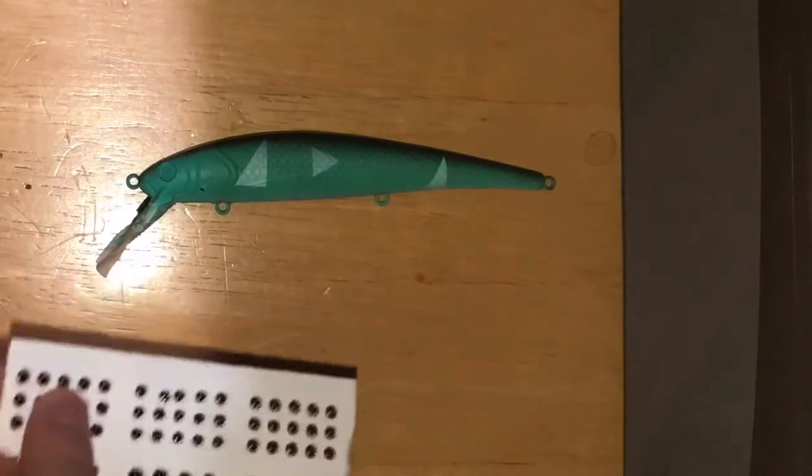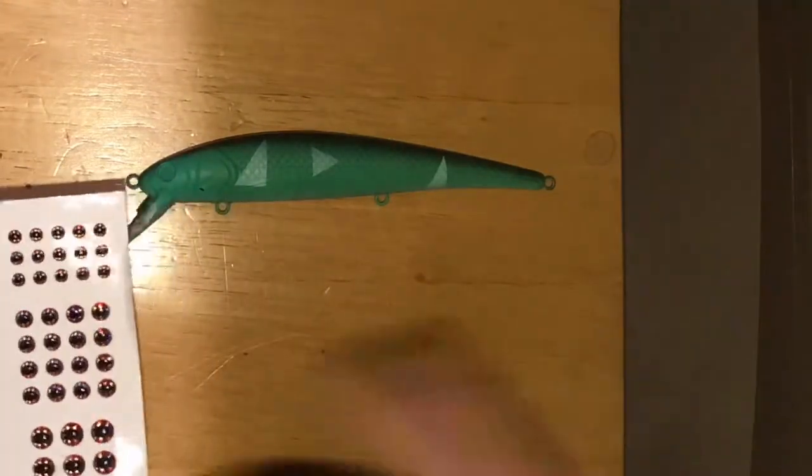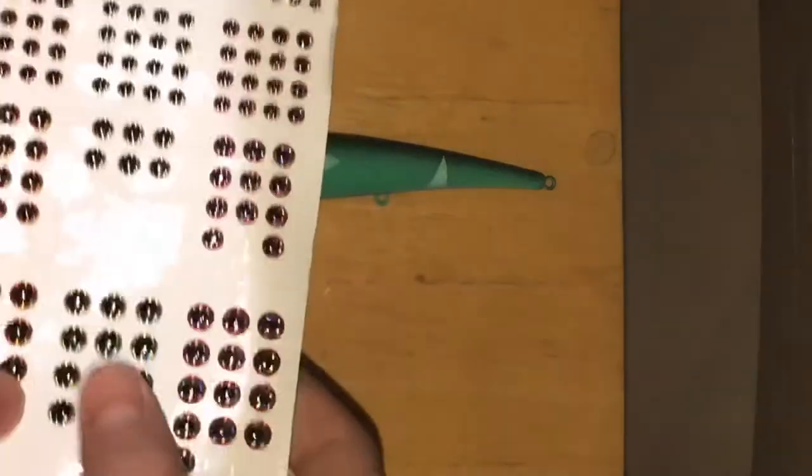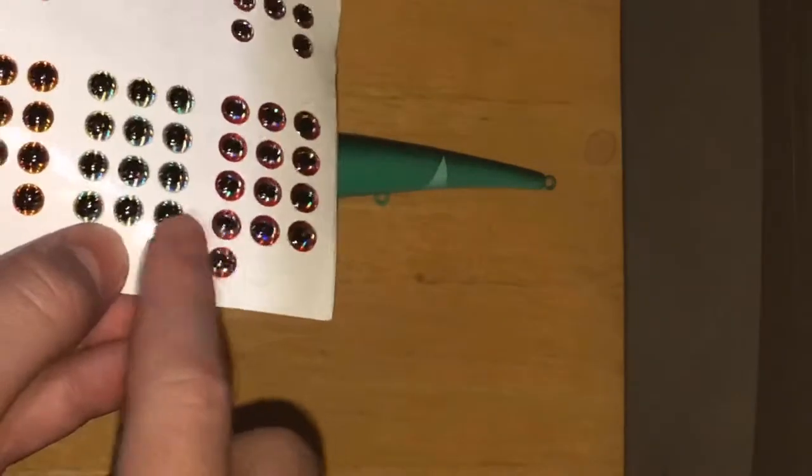Do I want to use red? Does red look good with green and black? Does that look realistic? No. Does green? Yes. This is a green jerkbait. I'm going to do greenish yellow eyes. So these ones would be the perfect ones right here.